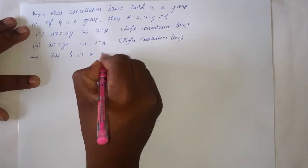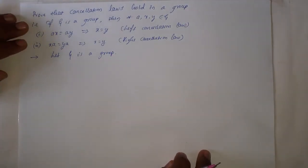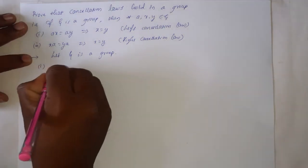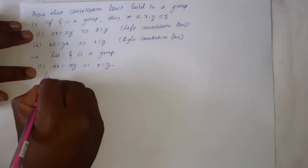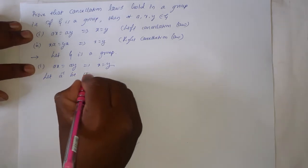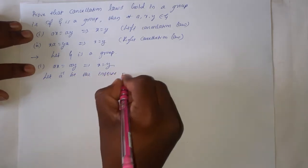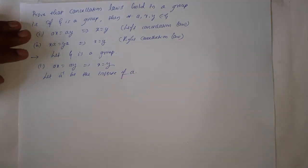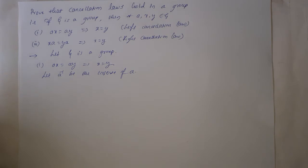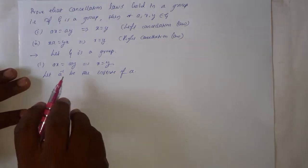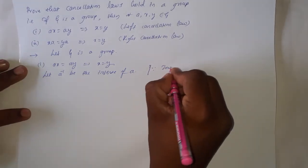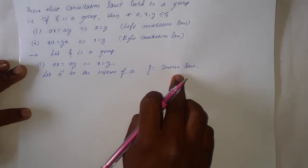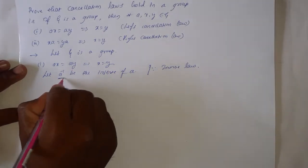Let G be a group. We need to prove that AX equal to AY implies X equal to Y. Let A inverse be the inverse of A. Since G is a group, it must satisfy all four laws: closure law, associative law, identity law, and inverse law. By the inverse law, A inverse exists in the group G.